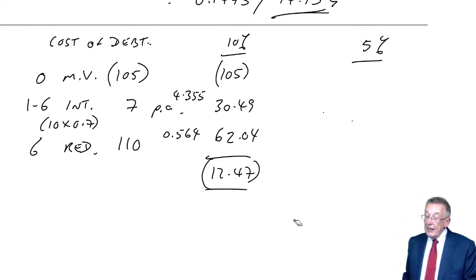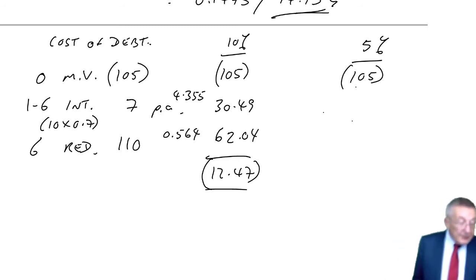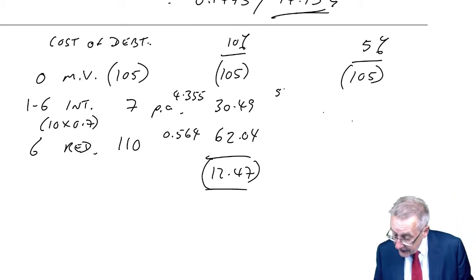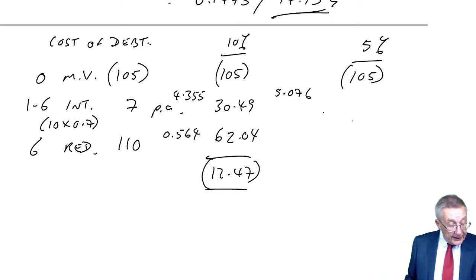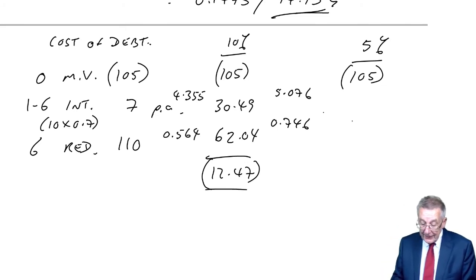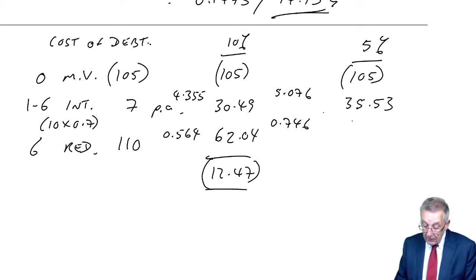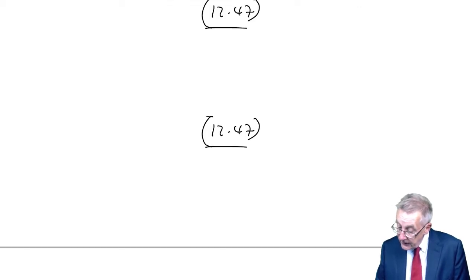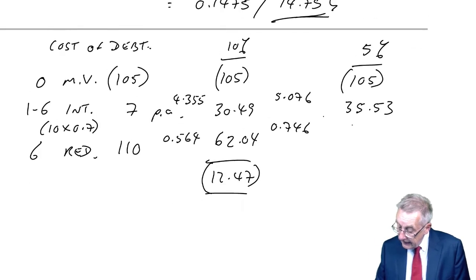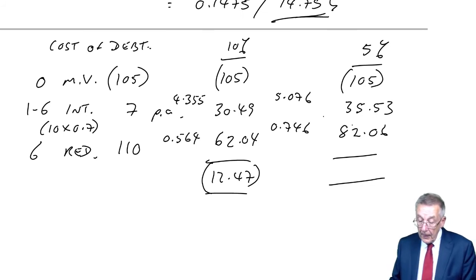At 5%, $105 is $105. The six year annuity at 5% is 5.076. The ordinary present value factor, six years at 5%, is 0.746. So the present values, the annuity, seven times 5.076, 35.53, $110 times 0.746, 82.06. And therefore the net present value, 12.59.